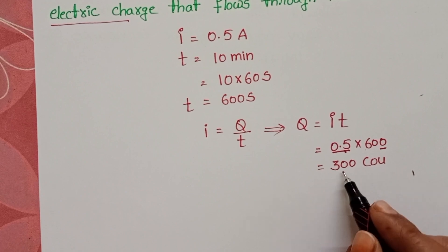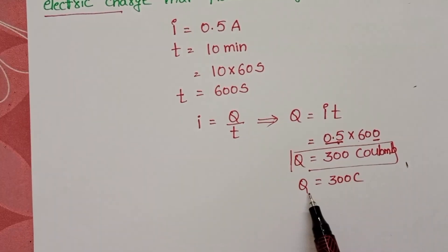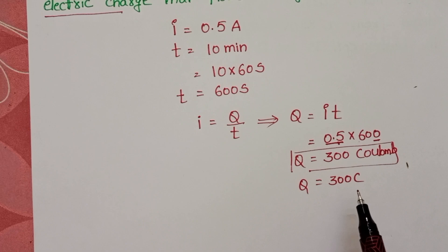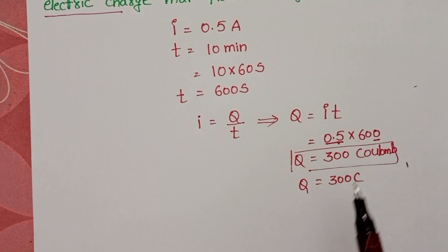Coulomb is the unit of electric charge. 300 coulombs is the total electric charge passing through the filament in the given time. This is the required answer.